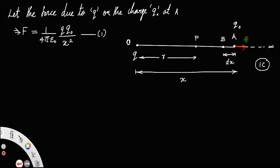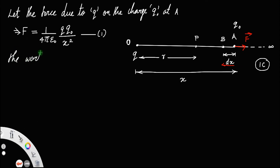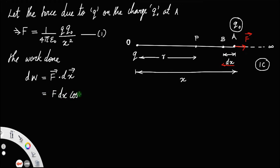The direction of force is away from Q, and we are moving the charge from infinity to point P, which means the charge is moving from A to B, so the direction of displacement is towards the left. The work done dW is the work done to move charge Q0 from A to B against the electrostatic force. By definition, work equals F·dx. Since F and dx are in opposite directions, theta is 180°, so dW = F dx cos(180°) = −F dx.